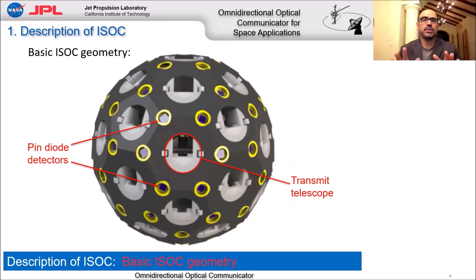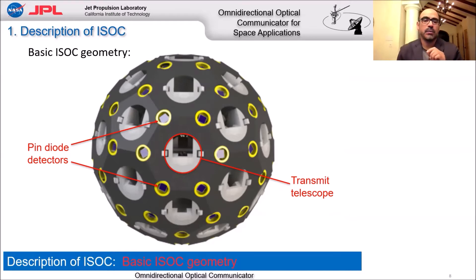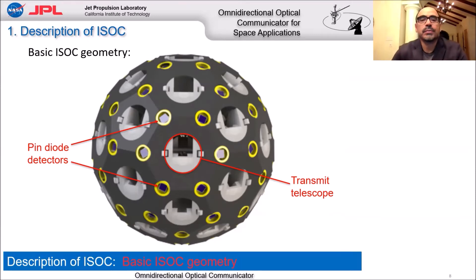We use the detectors to receive the incoming signals, calculate the direction where the signal comes from — obtaining the azimuth and elevation to that direction — and then select the appropriate telescope to close the link. This allows us to shoot back a signal and establish a duplex link.